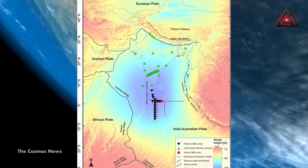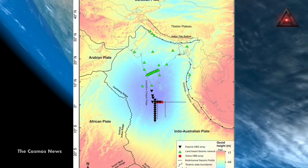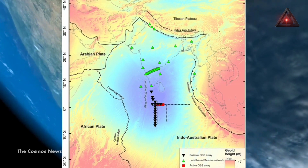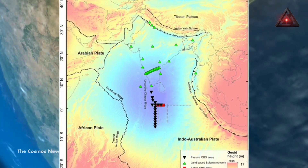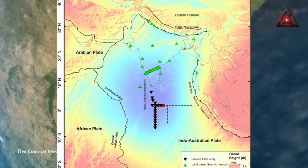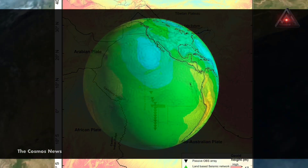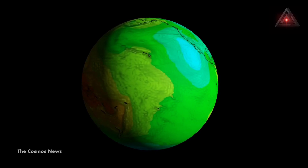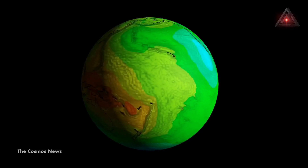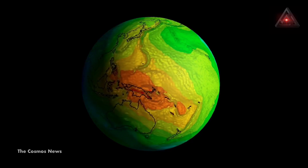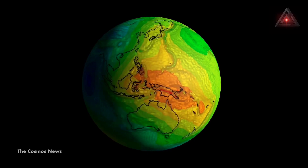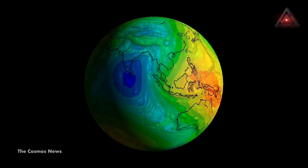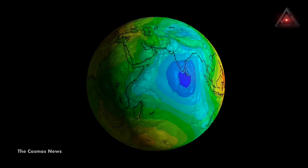The scientists wrote in the study: "Geologists assimilate plate reconstruction in global mantle convection models, starting from 140 Ma, and show that sinking Tethyan slabs perturbed the African large low-shear-velocity province and generated plumes beneath the Indian Ocean, which led to the formation of this negative geoid anomaly."